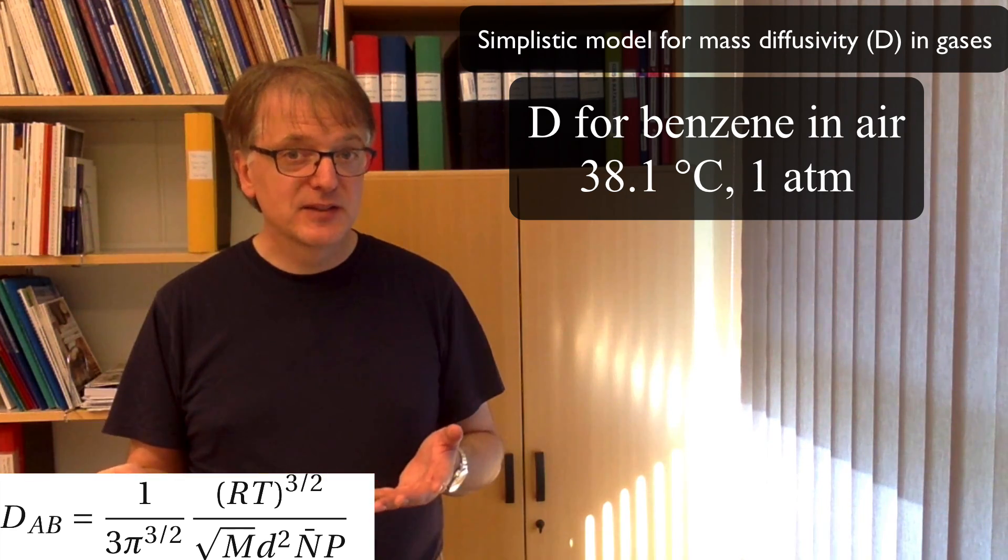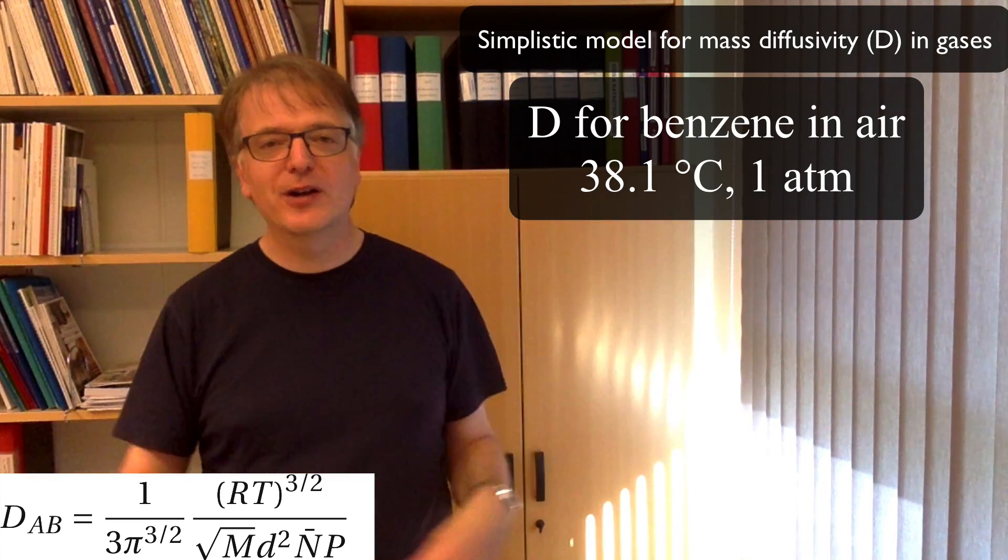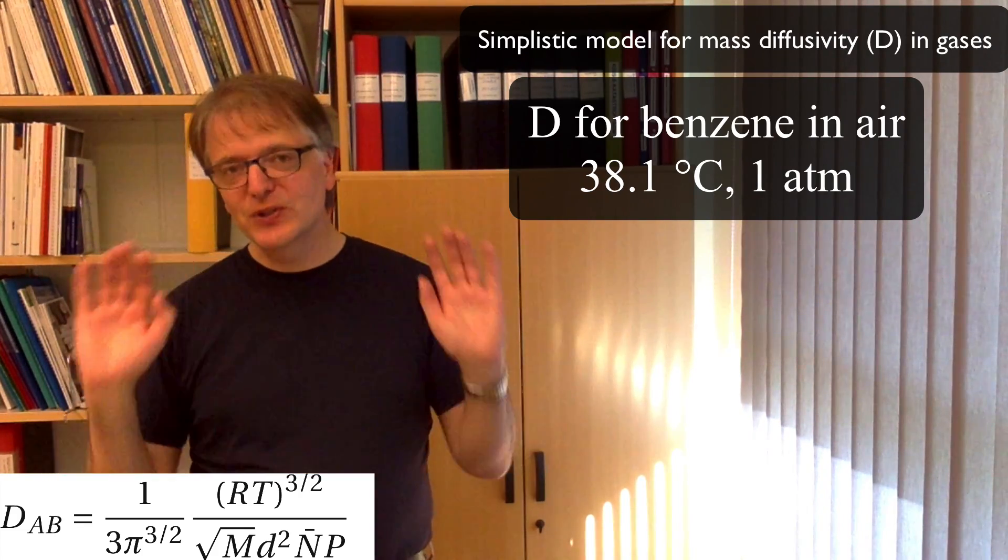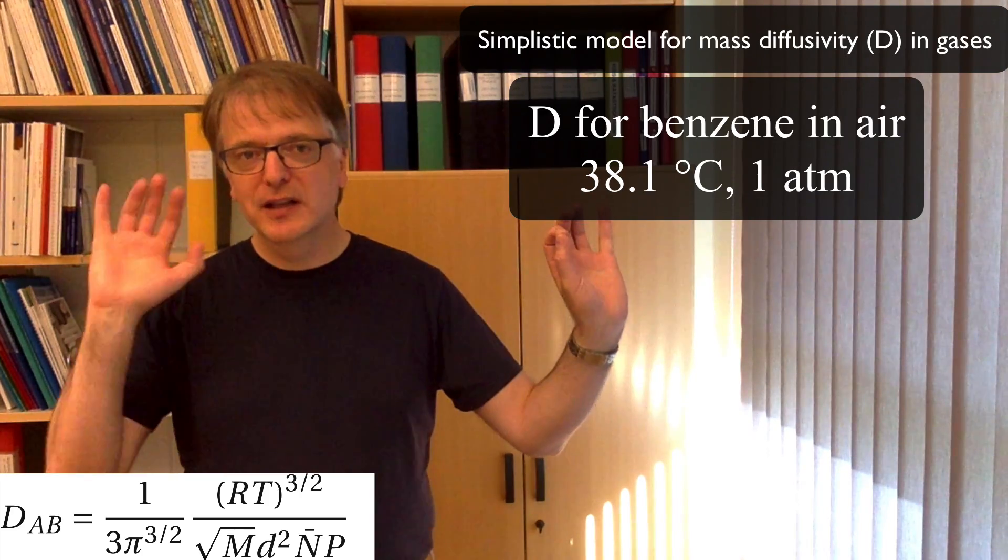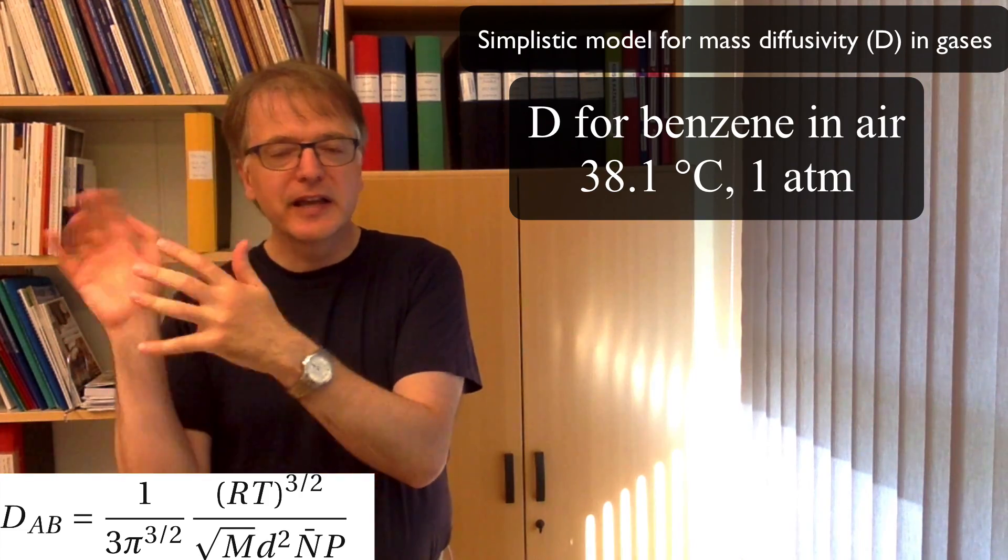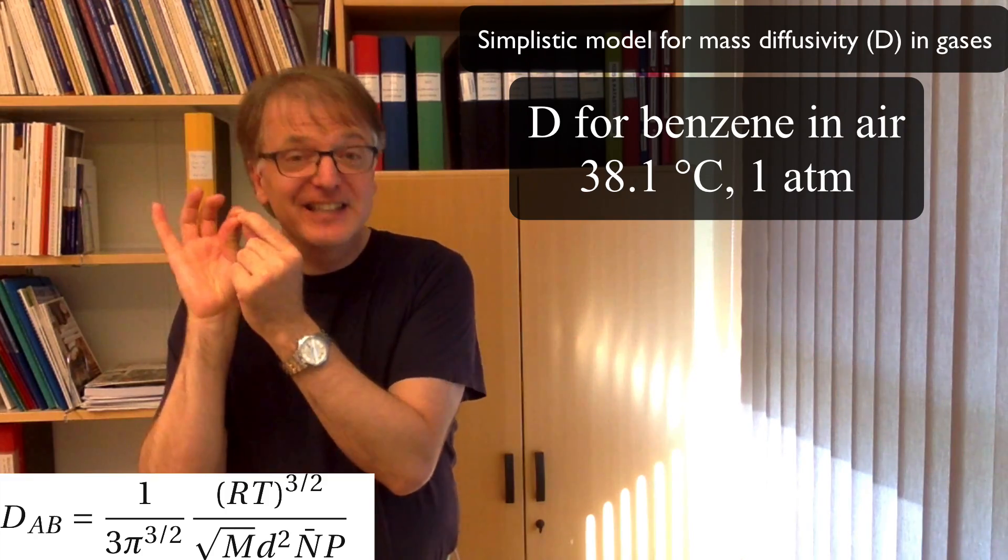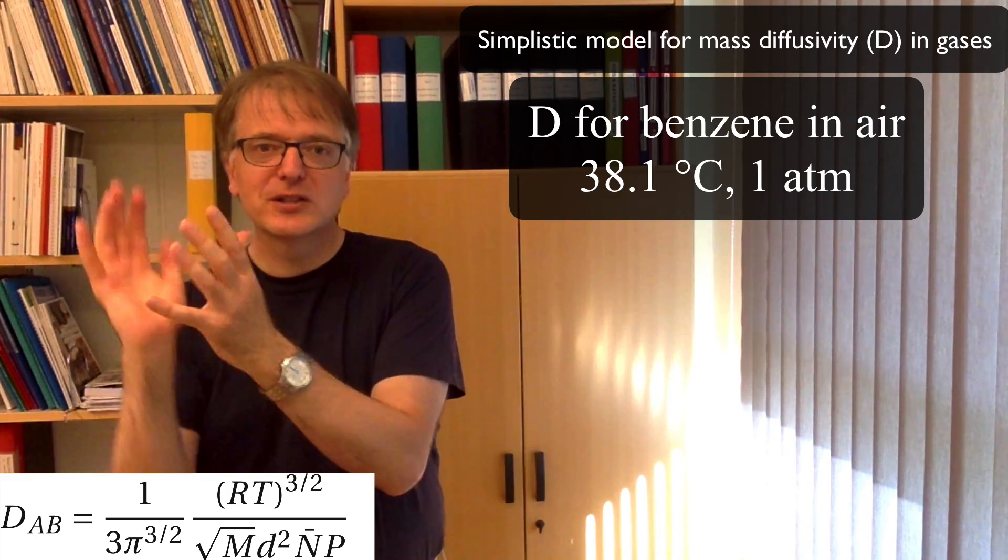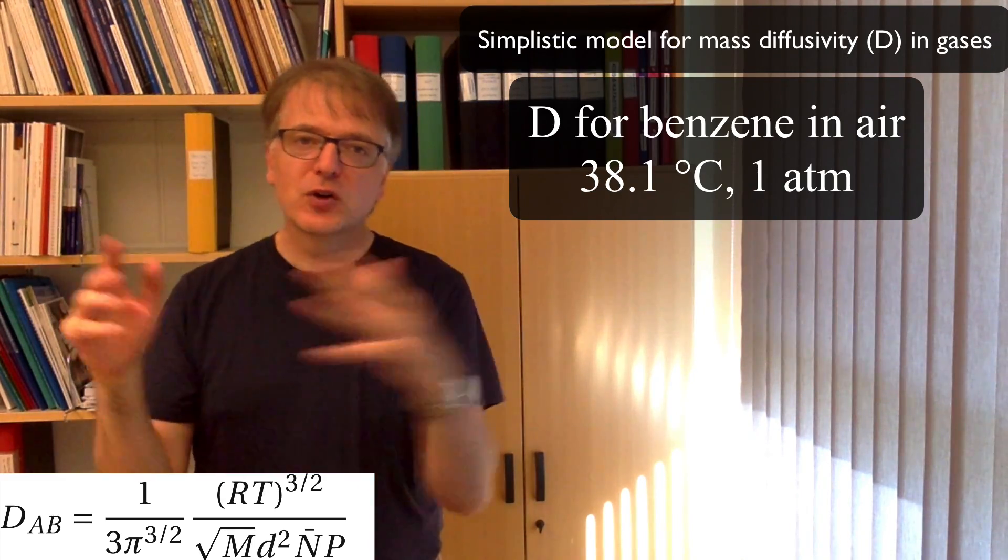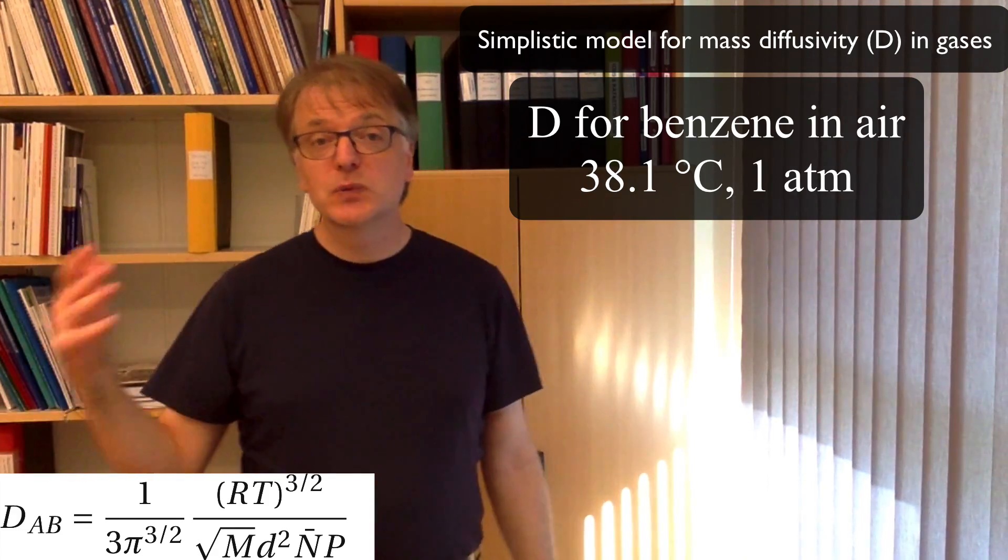Now, air is more than one substance. It's nitrogen, it's oxygen, it's argon. But we can treat it as one component because we have benzene on one side and then we have air on the other side. And benzene will spread into the air. And at any point where you look, if you don't look into the very detail, if you look at a slightly larger section, you will always have the same relation between nitrogen and oxygen, no matter how much benzene you put in there. So we can treat air as one component.